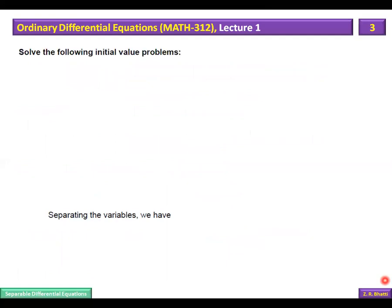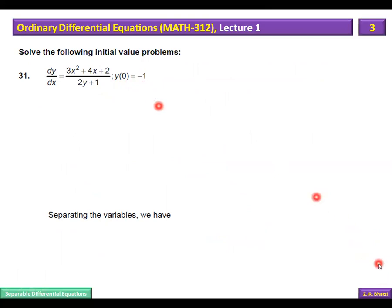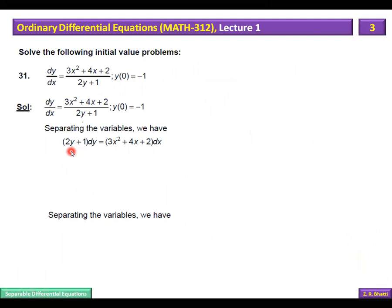Next, solve the following initial value problems. Separating the variables and integrating gives: y³/3 + y = x³/3 + 2x²/2 + 2x + c, which simplifies to y³ + y = x³ + 2x² + 2x + c.